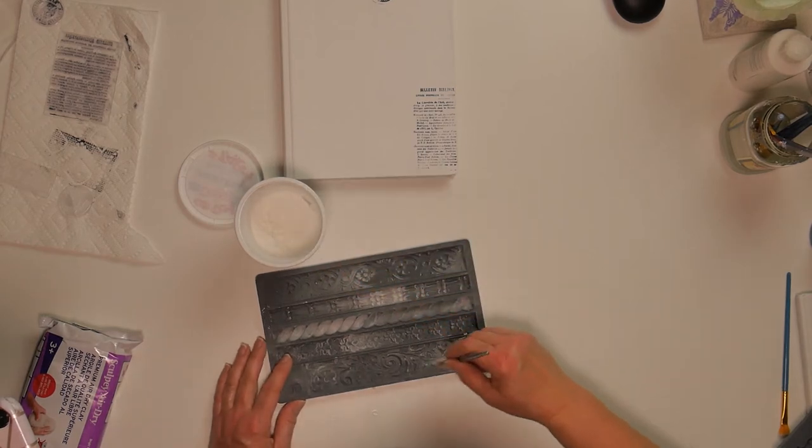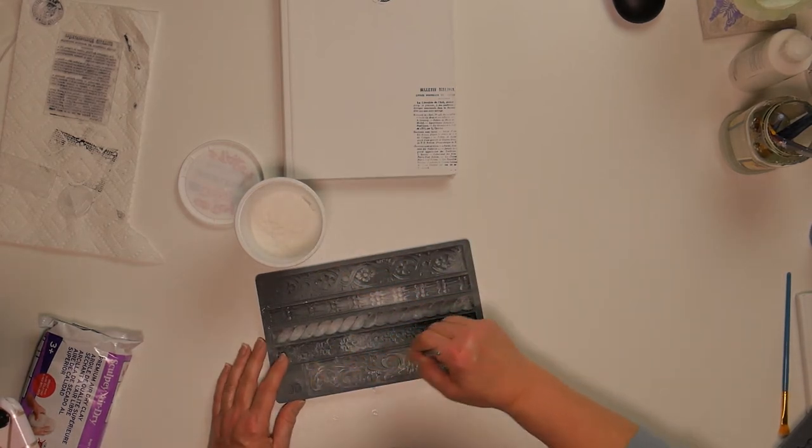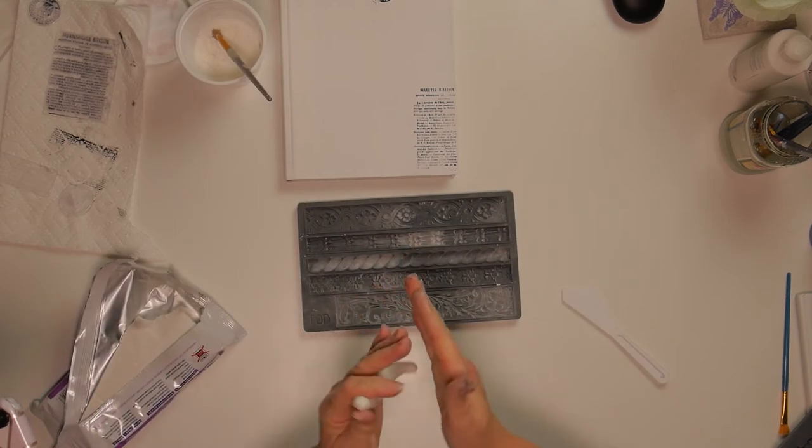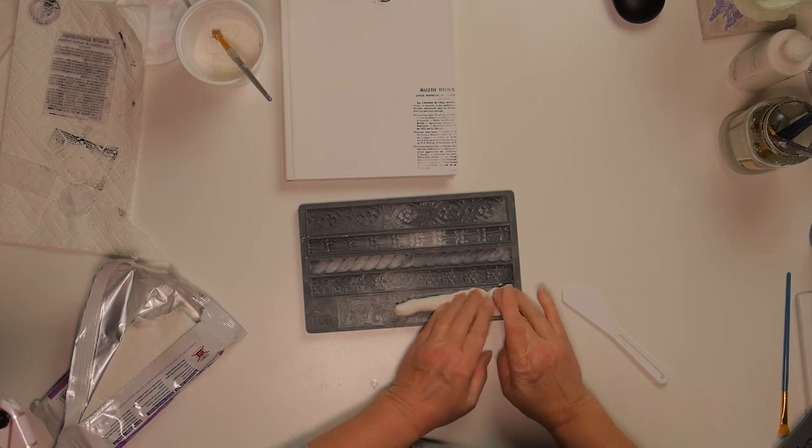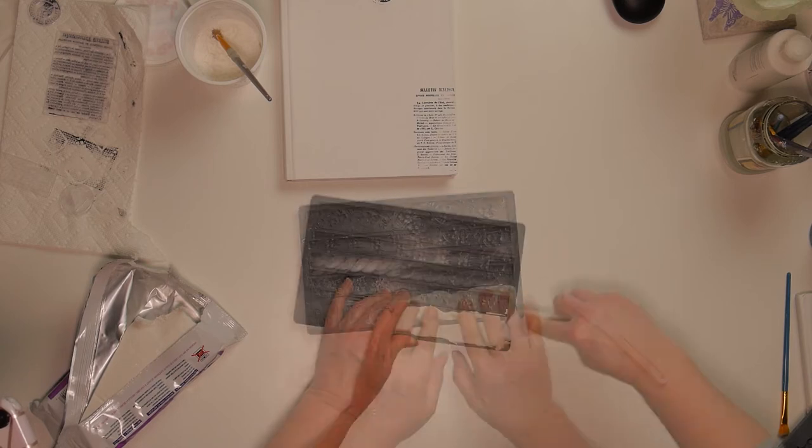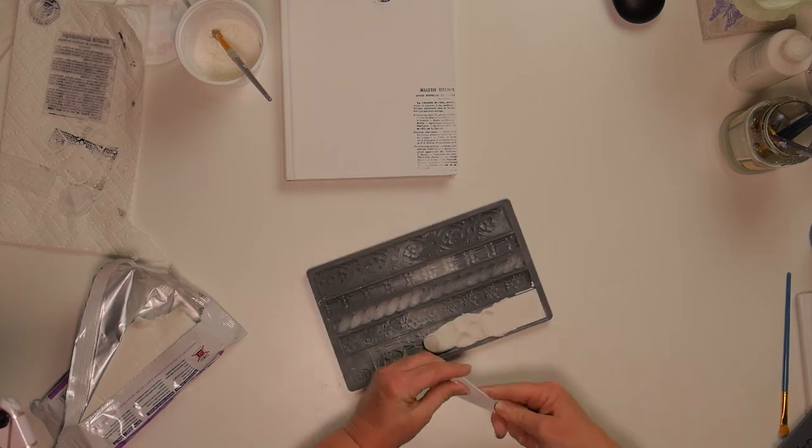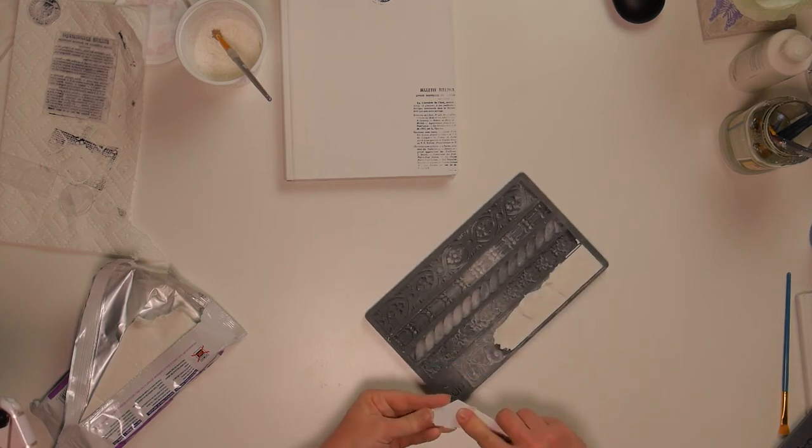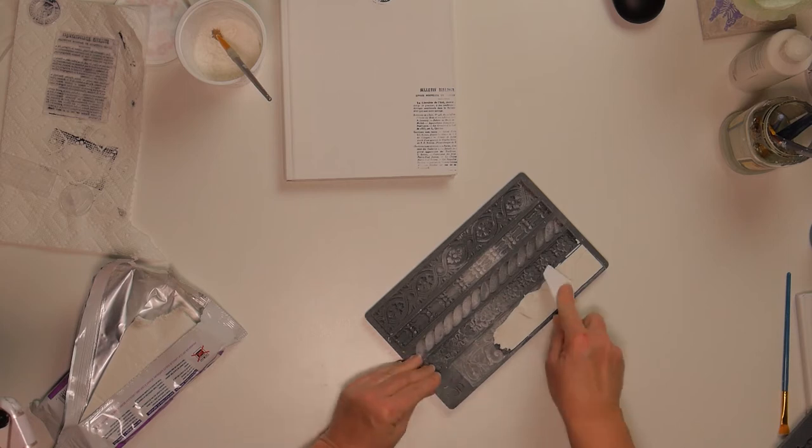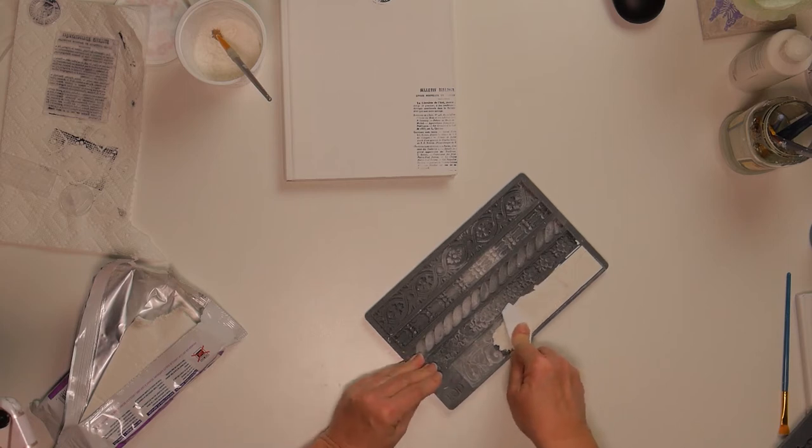Now I'm going to prep my mold with some cornstarch. This is the IOD Trimmings 2 mold. What I'm doing is getting a piece here that I want to use. I don't want to use the whole strip. I'm just going to take part of this piece here to put on the top of the book.